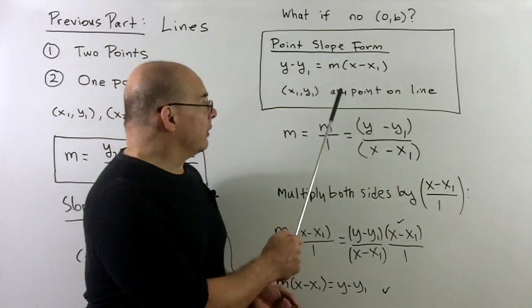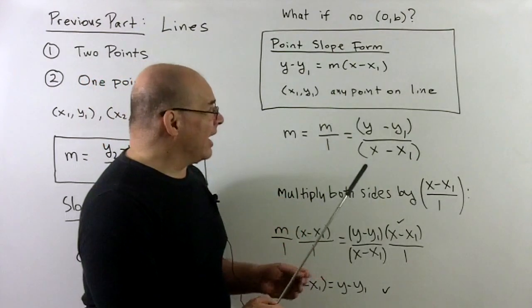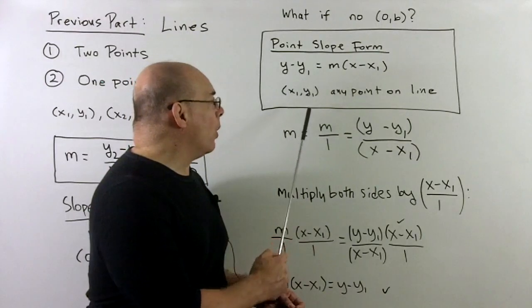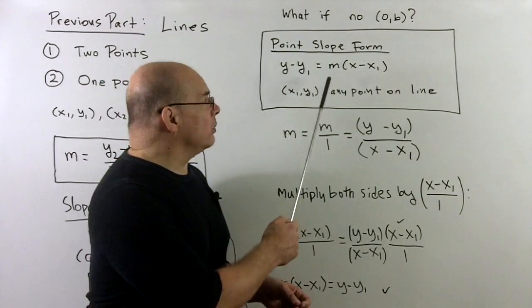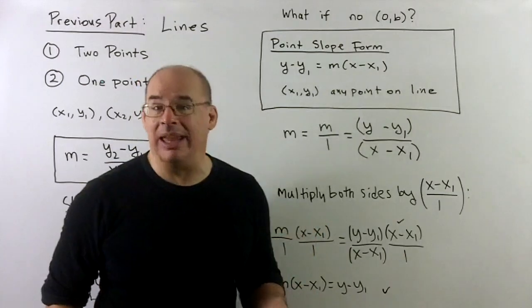Then we want to bring out what we call the point-slope form. So this looks like, if we're given the slope m, and any point on the line (x₁, y₁), we have y minus y₁ equals m times parentheses x minus x₁.